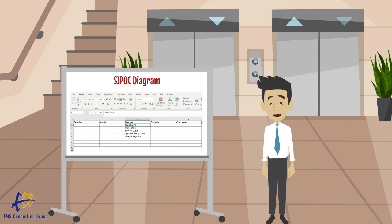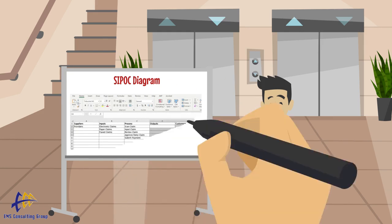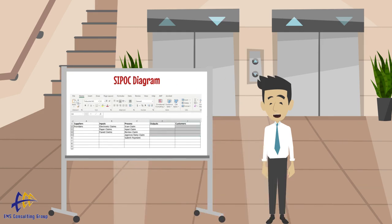Then we ask what are the inputs to this process. Inputs would include anything that is used in the process but not created during the process. We will list the inputs in the appropriate column. Then we will ask who supplies the inputs — this could be internal departments or even external suppliers — and fill this in the supplier column.